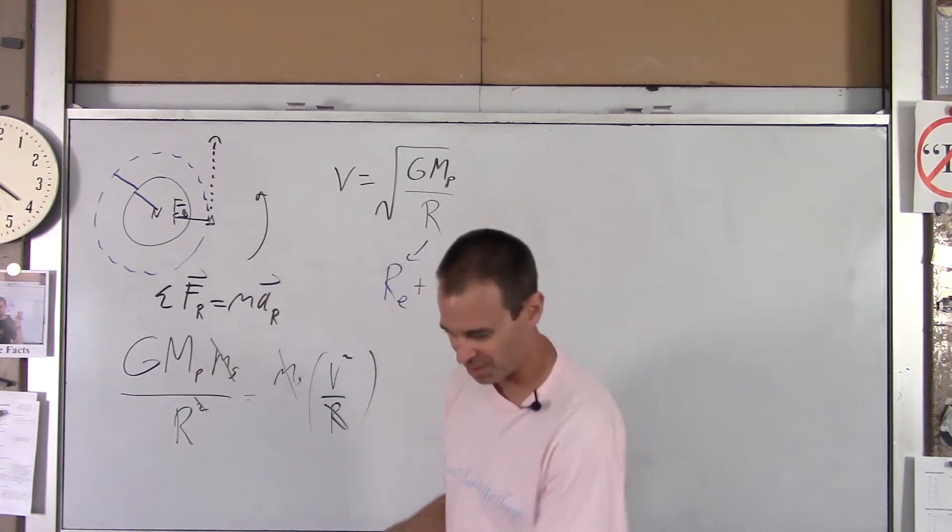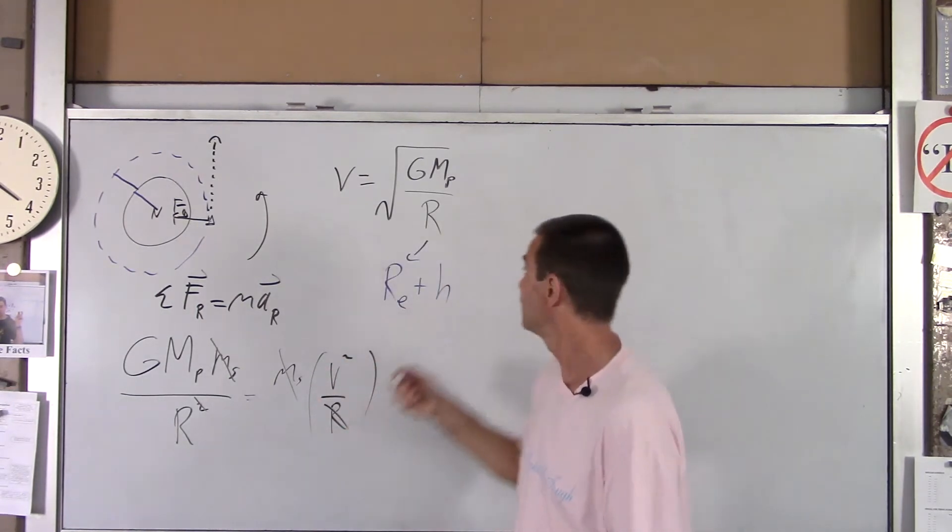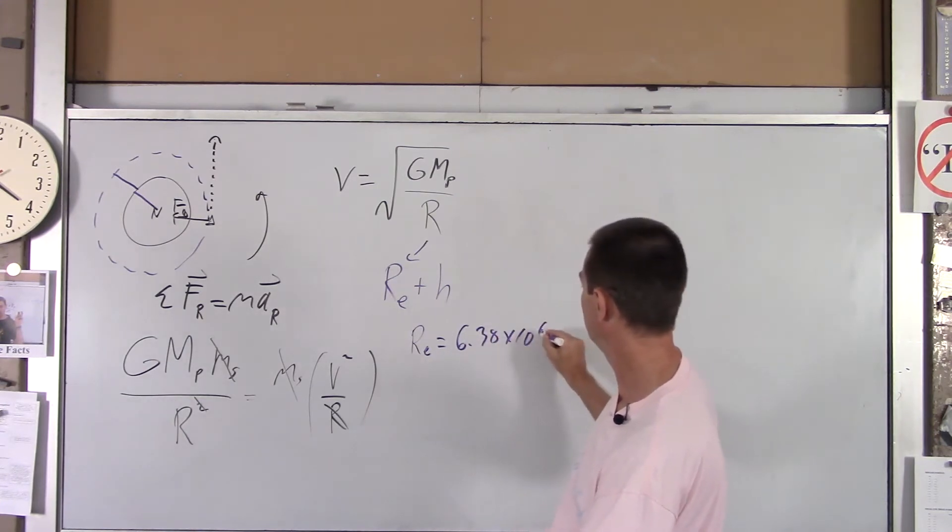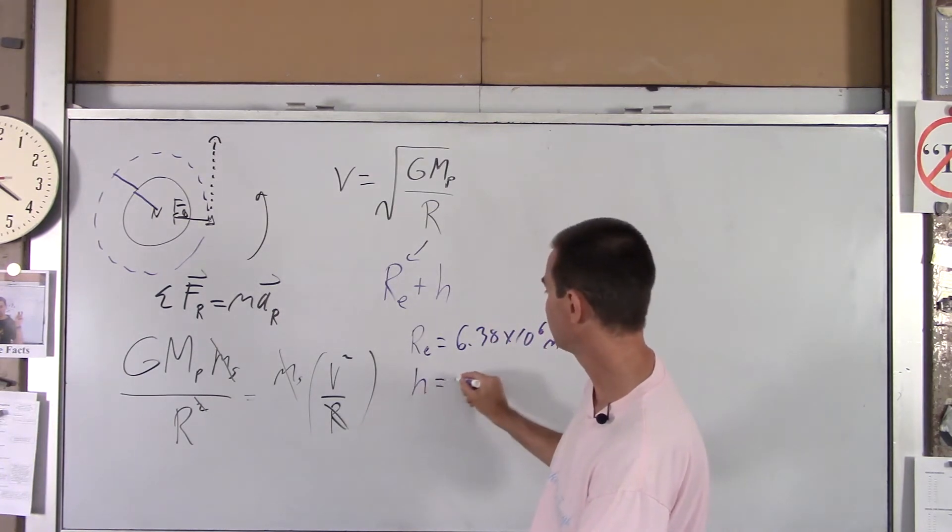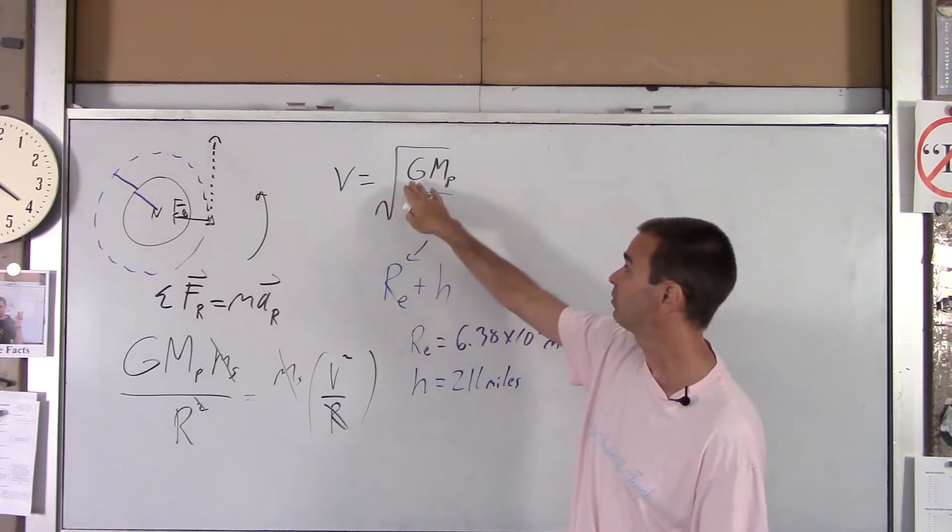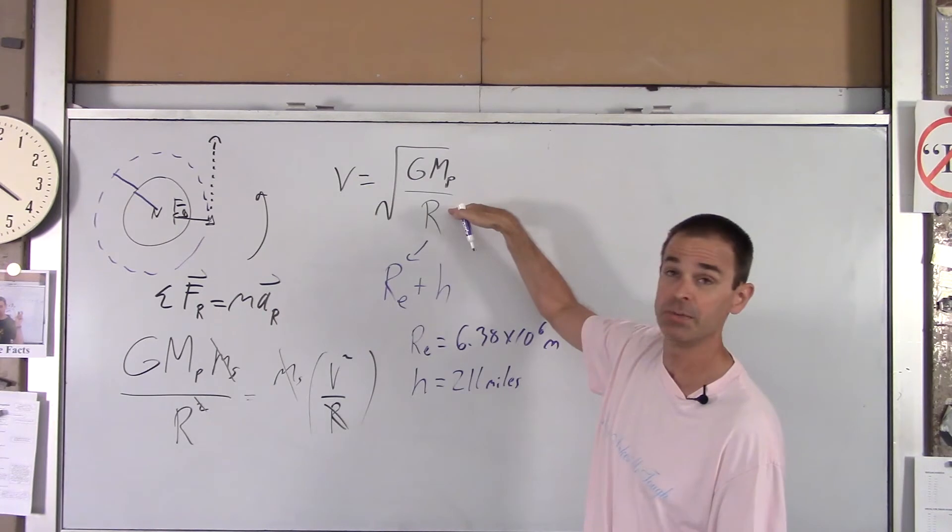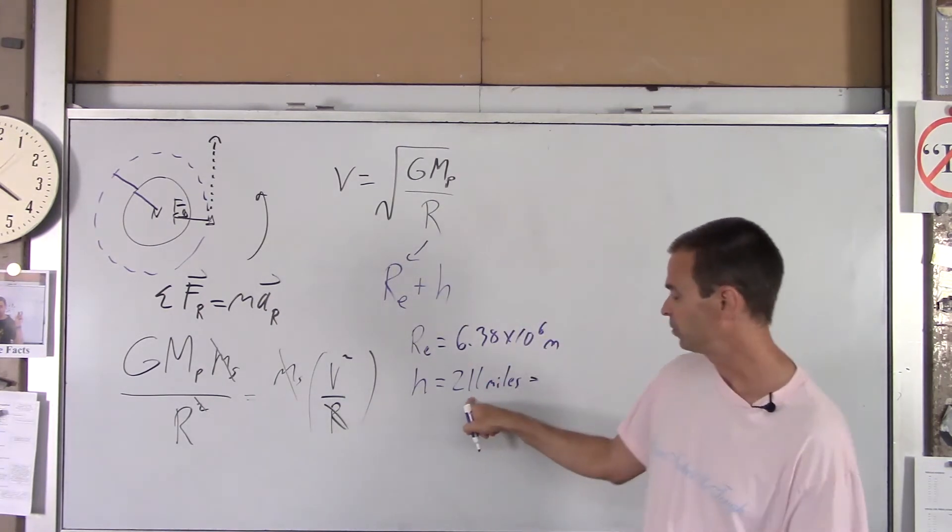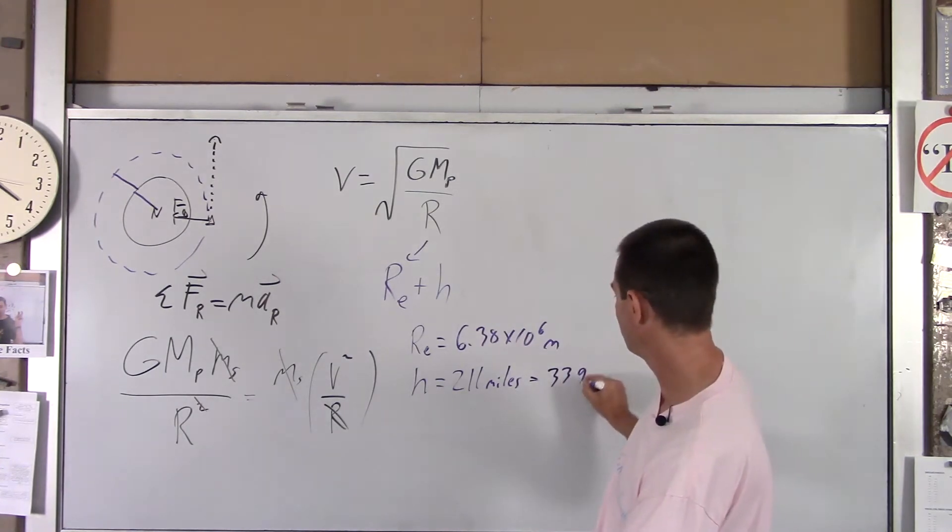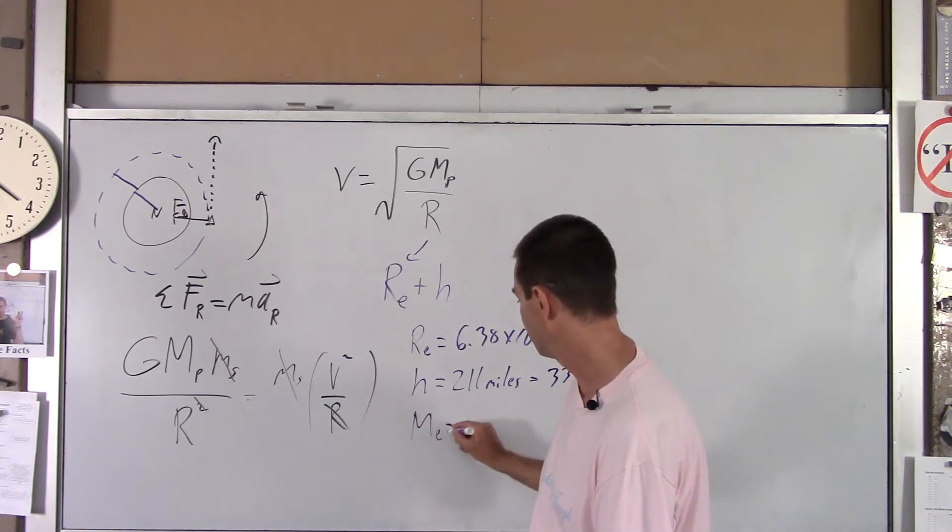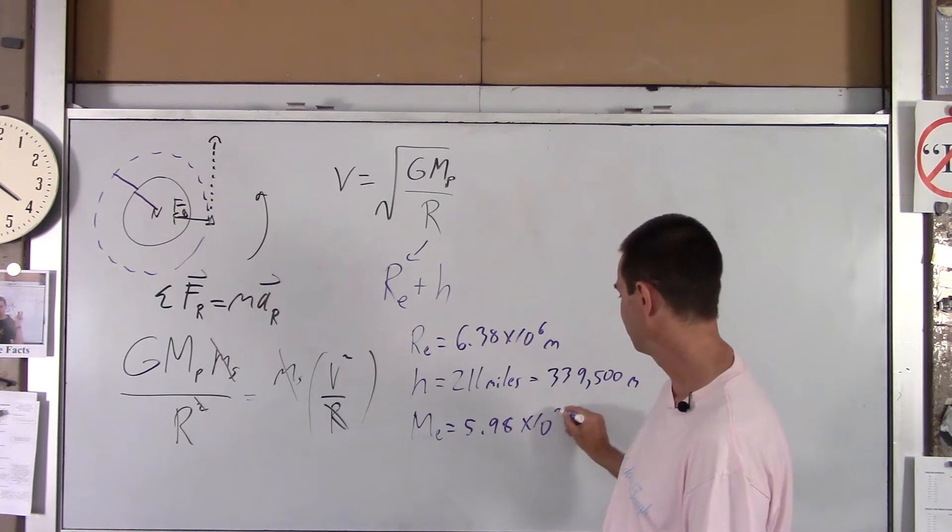Now, just for fun, we'll throw some numbers into here. For instance, let's say this is the International Space Station. In that case, the numbers would be the radius of the Earth, which is approximately 6.38 times 10 to the 6 meters. The orbital height above the Earth's surface, on average, is 211 miles. Now, right away, you probably noticed an issue. You've got to have, when you're using this equation, any equation with big G in it, you've got to use mass in kilograms and distance in meters. So if you multiply this, there are 1,609 meters approximately in a mile. So if you multiply that by 1,609 and round the number, you get 339,500 meters. That's the height in meters above the Earth's surface of the International Space Station.